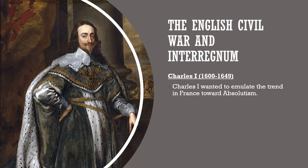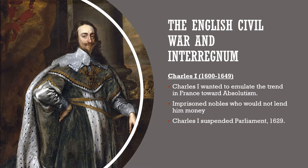Charles I hated having to go cap in hand to Parliament every time he wanted to raise money. Instead, he borrowed — lots and lots of money — mostly from nobles, who might find themselves imprisoned if they refused, directly violating Magna Carta. Charles was not well liked among many nobles, and things were quite tense during his reign. In 1629, he simply suspended Parliament, and there would be no sitting of Parliament for eleven long years.